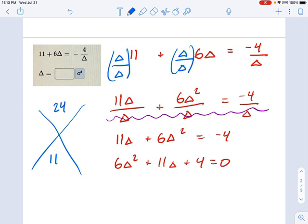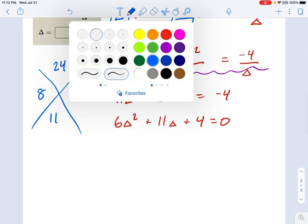Now what multiplies to 24 but adds to 11? 8 and 3. Okay, so let's go ahead and write this down here.